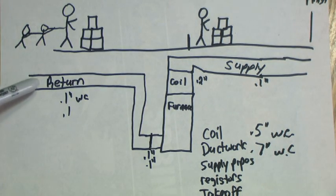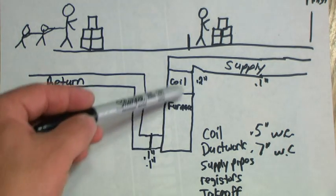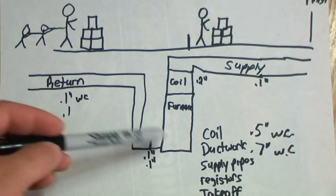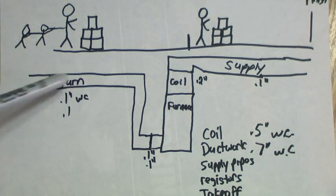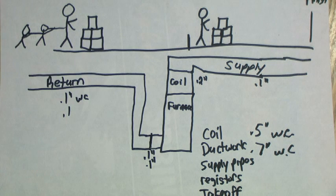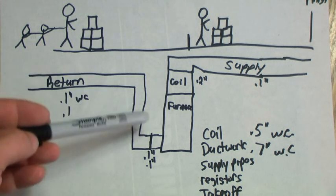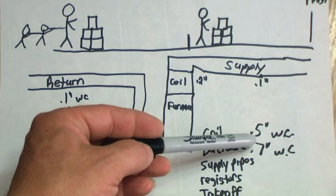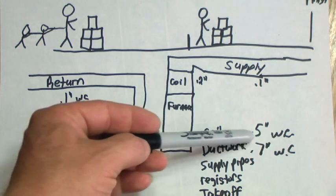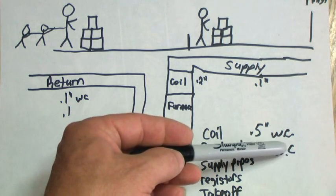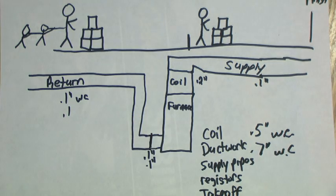So when you're designing the system, you want to read the product data of all the takeoffs, elbows, everything, your supply ductwork, just everything. And you want to try to achieve a certain total static pressure.